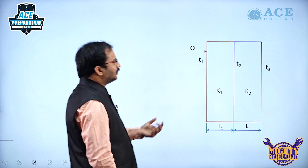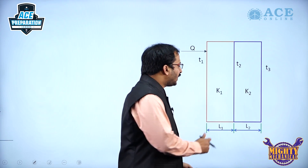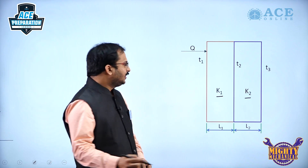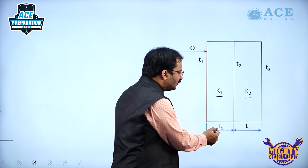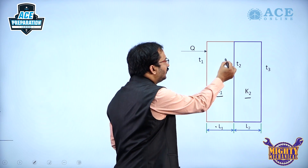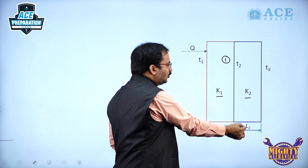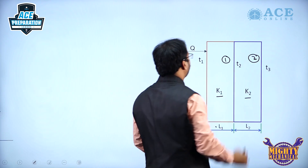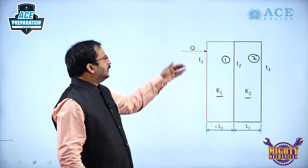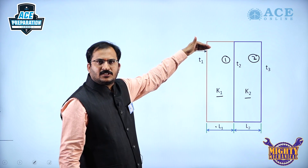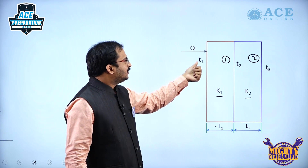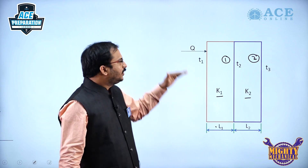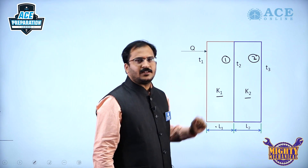There are two different materials here which have different thermal conductivities K1 and K2. The thickness of these two materials is also different — L1 is the thickness of the first slab and L2 is the thickness of the second one. Heat flow takes place in this particular direction because we have considered T1 greater than T2 greater than T3.